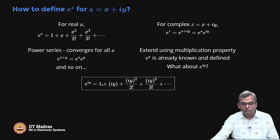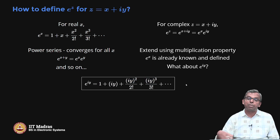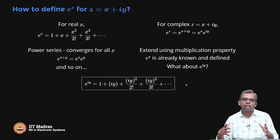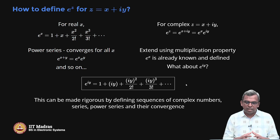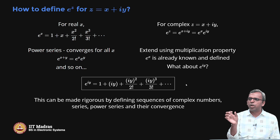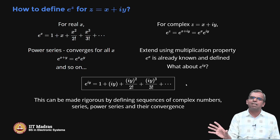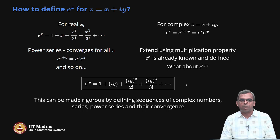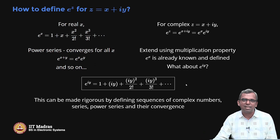This series needs some care. On the right-hand side you have a power series involving variable y where the coefficients are complex numbers — so it's a complex series. We need to develop a theory for complex sequences, complex series, and complex power series to define e^(iy) properly. I'll skip that since it's largely the same as the real case. For complex numbers, convergence is defined via real and imaginary parts, or using the absolute value — both approaches work cleanly.